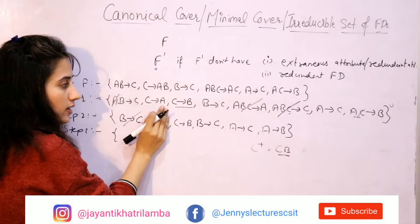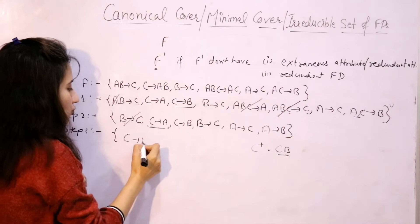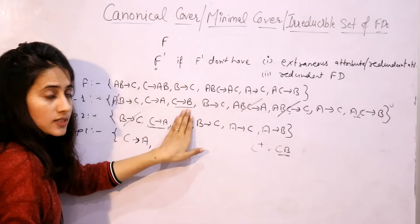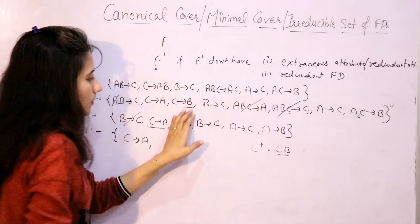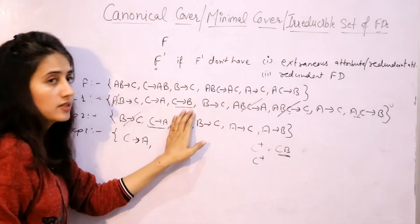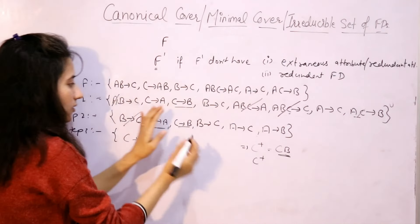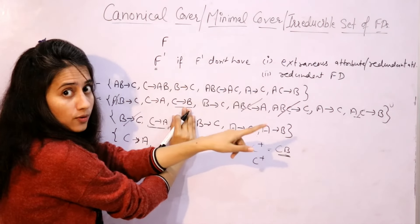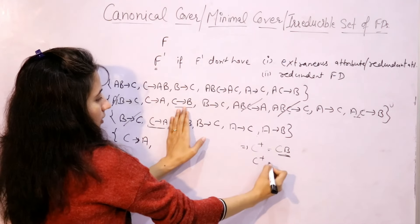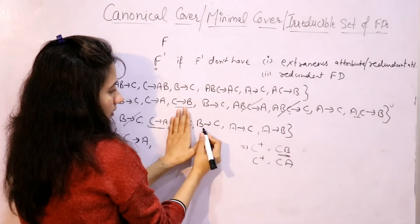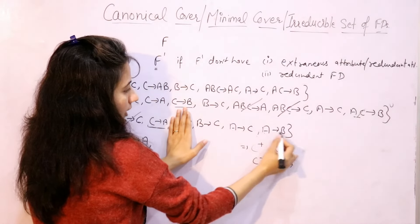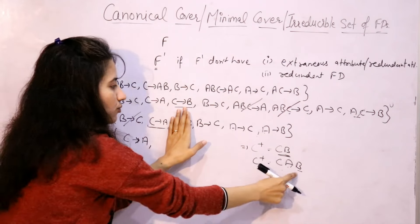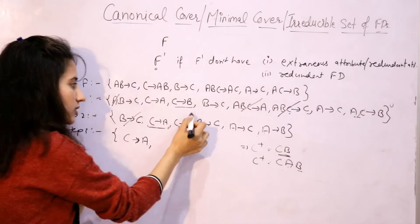Now check C → B: discard it and find C closure from the remaining dependencies. In C closure: using C → A, we get A; using A → C, we get C; using A → B, we get B. So we have B in C closure after discarding C → B. That means C → B still exists indirectly, so it is redundant — discard it.